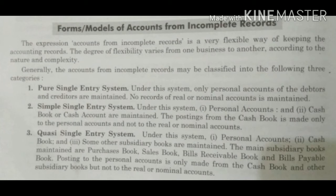Next topic is forms or models of accounts from incomplete records। Incomplete records बहुत flexible हैं — हम अपने need और business के nature के accordingly इसको maintain कर सकते हैं। Generally हमारे पास तीन forms हैं। Number one is pure single entry system: under this system only personal accounts of the debtors and creditors are maintained। No records of real and nominal accounts are maintained — सिर्फ debtors और creditors के accounts बनाए जाते हैं।